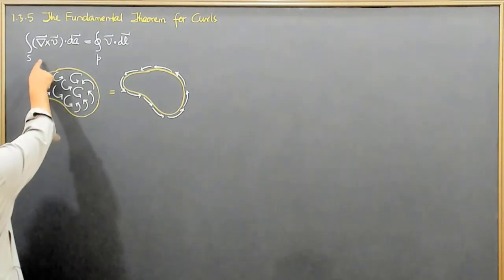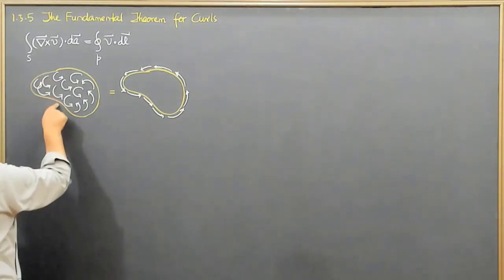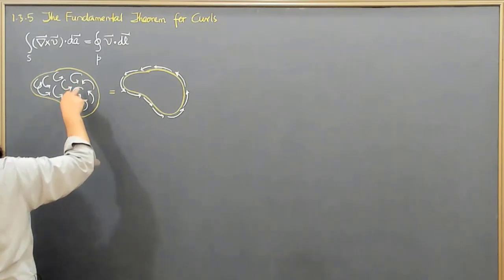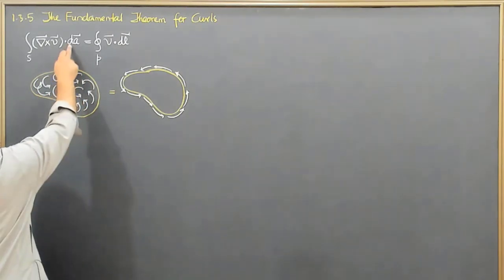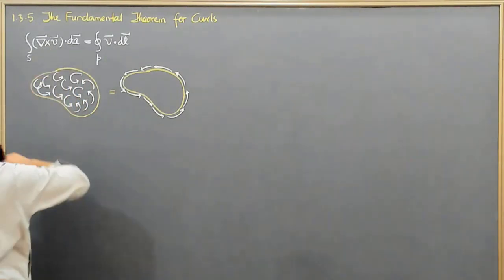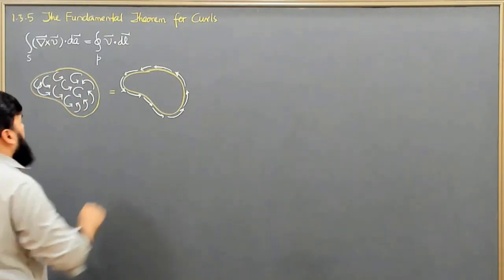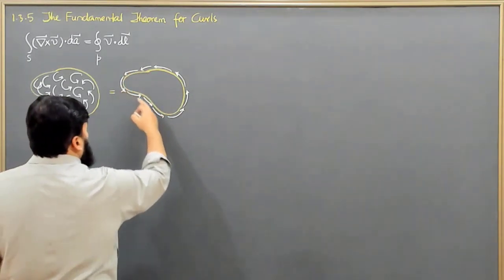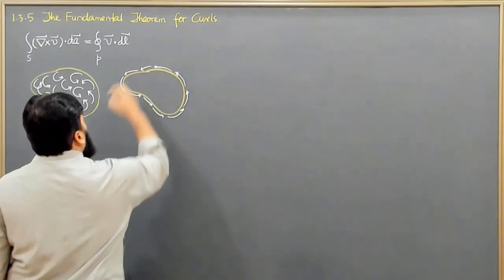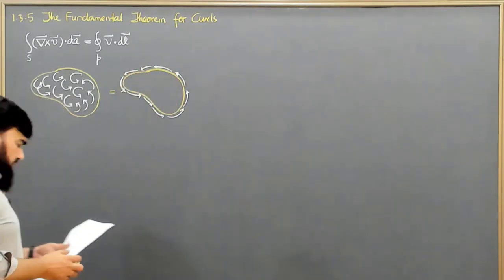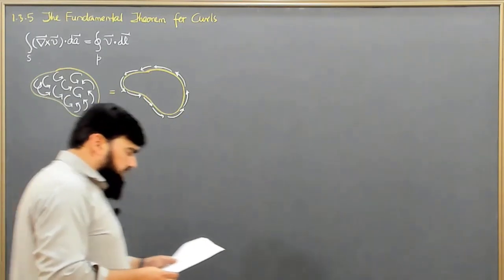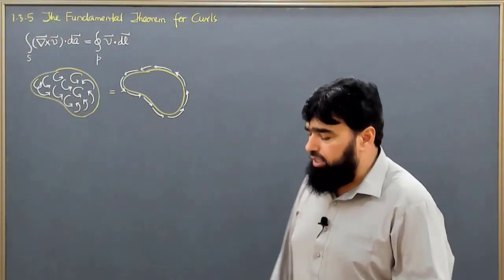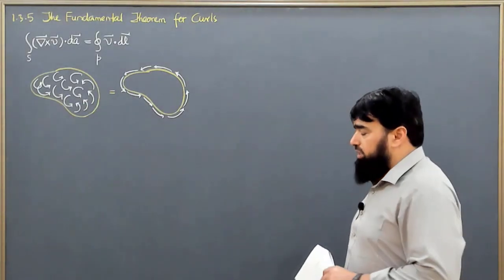This is the left side of the equation — we are calculating the flux of the curl of that physical quantity. And this is the right side of the equation — we just go around its boundary on a path integral — and the result will be the same.